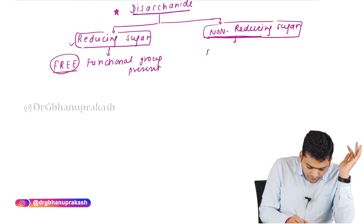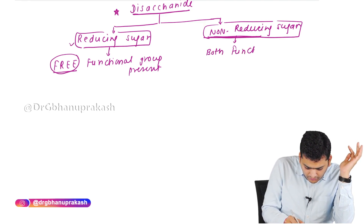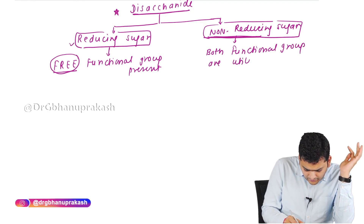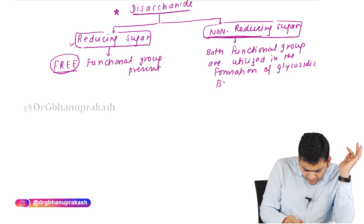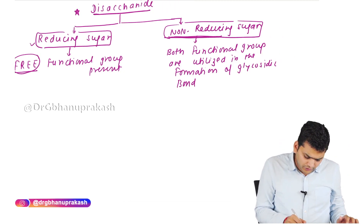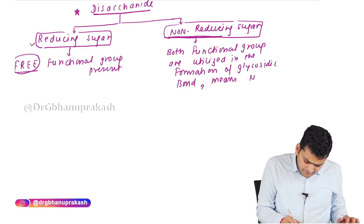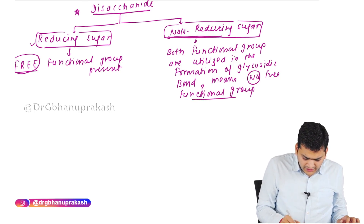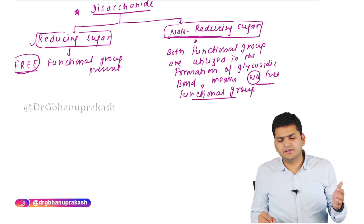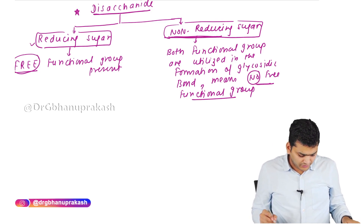If both functional groups are utilized in the formation of the glycosidic bond, there is no free functional group, and the disaccharide is called non-reducing. If a free functional group is present, it is reducing; if not, it is non-reducing.